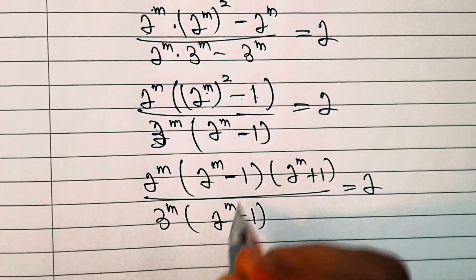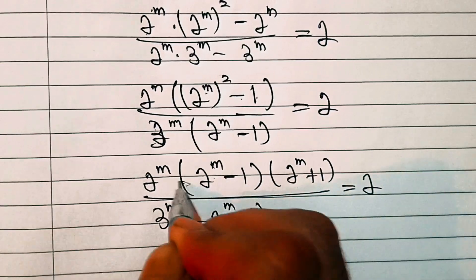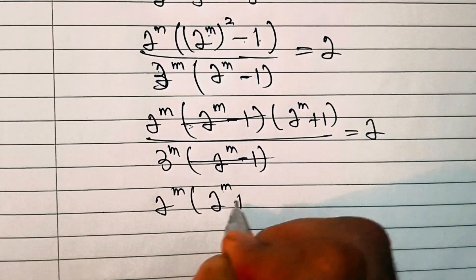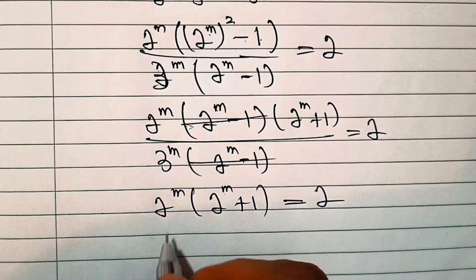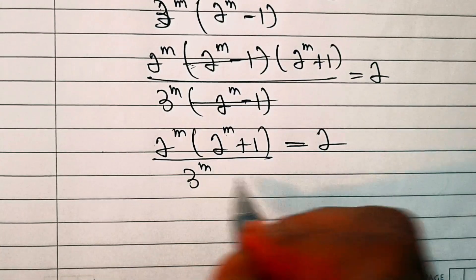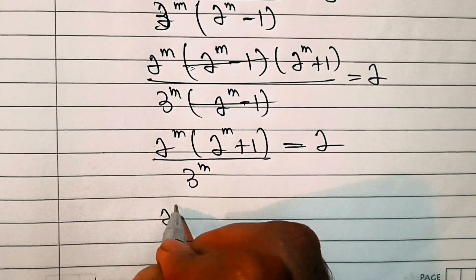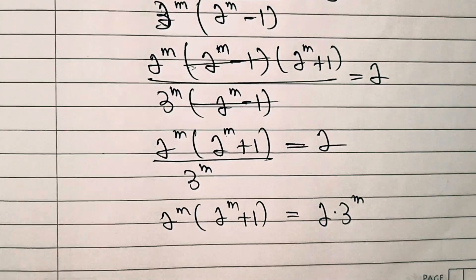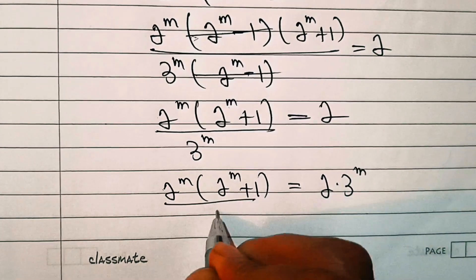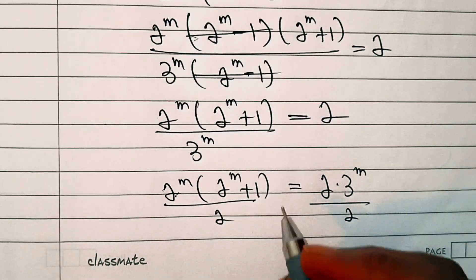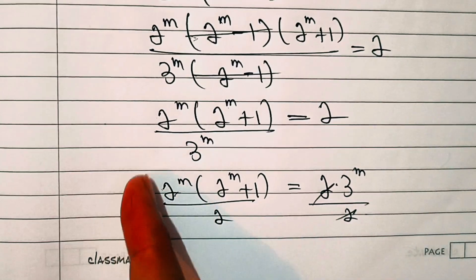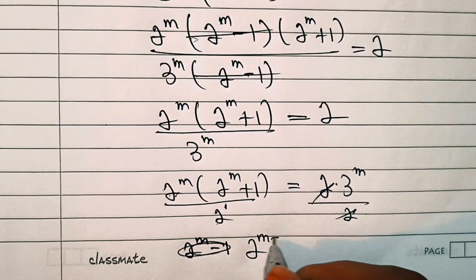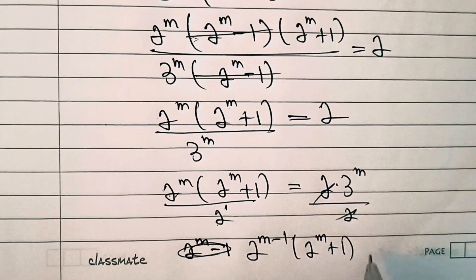The factor (2^m - 1) cancels from numerator and denominator, leaving 2^m · (2^m + 1) / 3^m = 2. Multiplying both sides by 3^m gives 2^m · (2^m + 1) = 2 · 3^m. Dividing both sides by 2, the right side simplifies to 3^m, and the left side becomes 2^(m-1) · (2^m + 1) = 3^m.